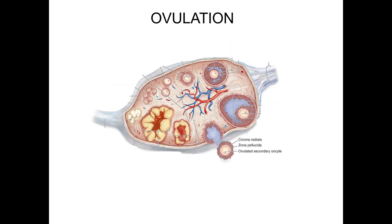Recall that there is a surge of luteinizing hormone that has multiple effects on the follicle. First, the dominant oocyte undergoes the first meiotic division and arrests in metaphase 2. At the same time, the granulosa cells produce prostaglandins and hyaluronan that loosen the cells and make the follicular fluid more viscous. These prostaglandins stimulate smooth muscle contractions in the theca externa, while the ovarian wall becomes weakened by plasminogen. These events all combine to cause the follicle to rupture and release the ovum along with the corona radiata into the peritoneal cavity.